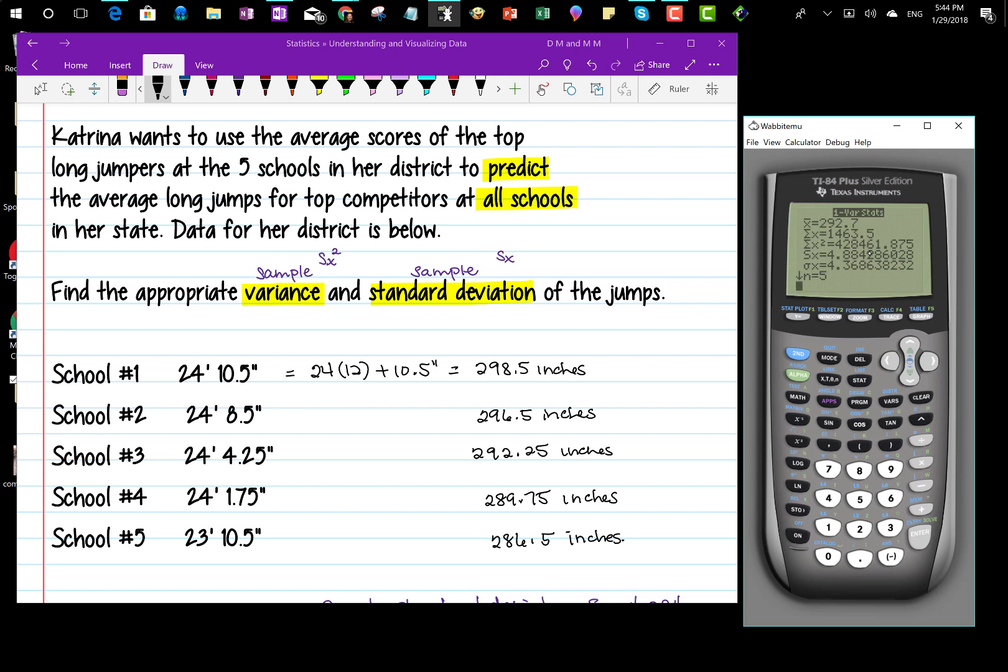To get my sample variance, I could just go back to the main screen, type that in, and square it. Or I can press vars, and choose number five, statistics. I'm wanting the sample variance, so that's number three, for sample standard deviation. And now I want to square it, and press enter. That tells me that my sample variance is 23.8563, if I round it to three decimal places.